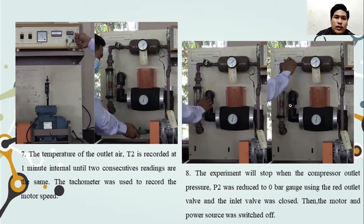Step eight, the tachometer was used to record the motor speed. The last step: the experiment stops when the compressor outlet pressure P2 was reduced to zero bar gauge using the red outlet valve and the inlet valve was closed. Then the motor and power source were switched off.